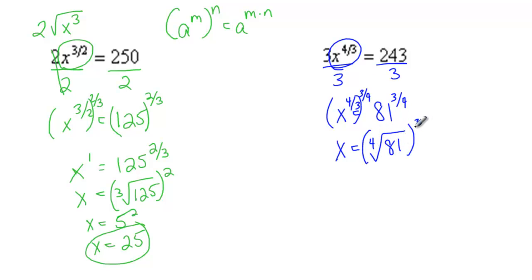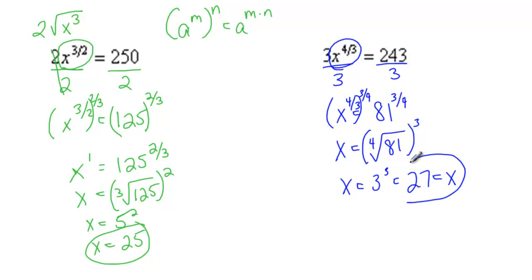The 4th root of 81 — 81 is a perfect 4th, that's 3. 3 cubed is 27. So 27 equals x, and that is my solution. To verbalize checking it: x to the 4 thirds means the cube root of 27 is 3, 3 to the 4th is 81, 81 times 3 is 243. That works out and we're good to go.